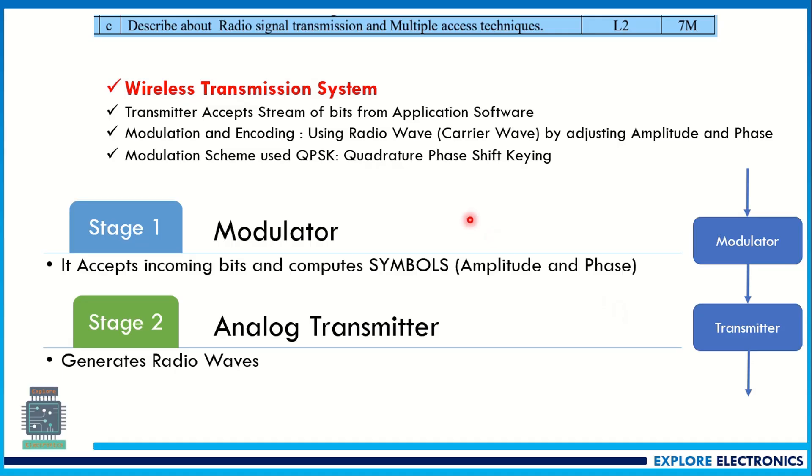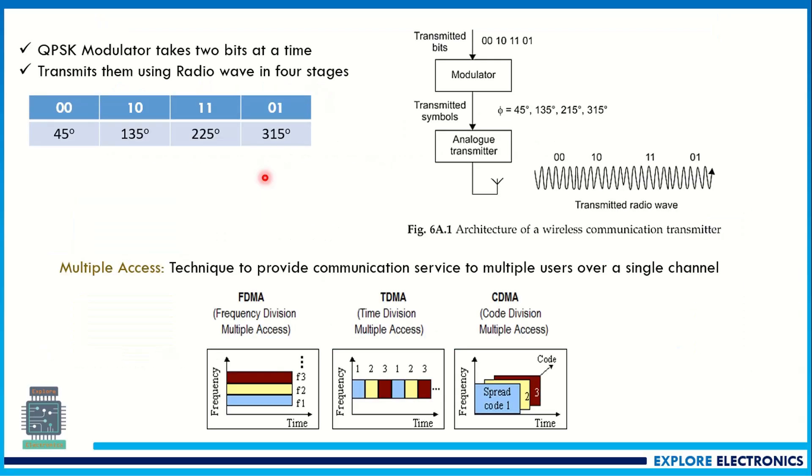Then describe about radio signal transmission and multiple access techniques. Radio signal transmission is wireless transmission, you need to explain, and later you need to explain multiple access techniques. So this is the brief idea about, or the explanation about, radio signal transmission or wireless transmission. It will be having a modulator, analog transmitter, and then you can also explain the QPSK modulation which is adopted in the wireless transmission.